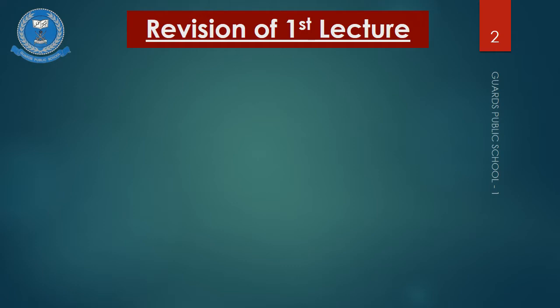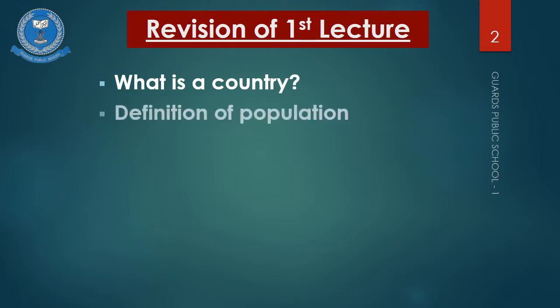In the first lecture you learnt what is a country. Can anyone tell me what is a country? A country is a land that is controlled by a single government. Countries can be large or small. What is the definition of population? A population is the number of living people that live together in the same place.